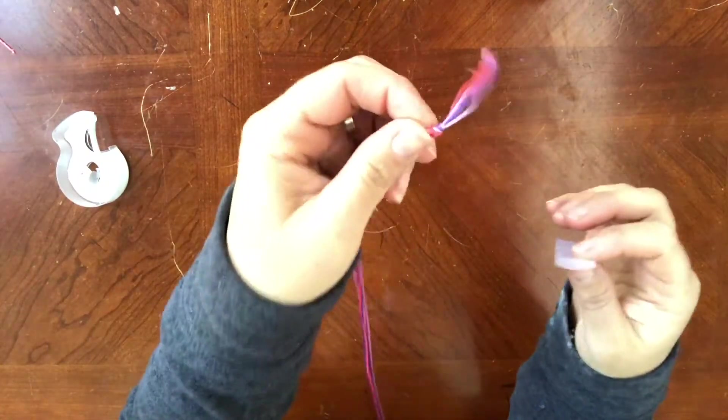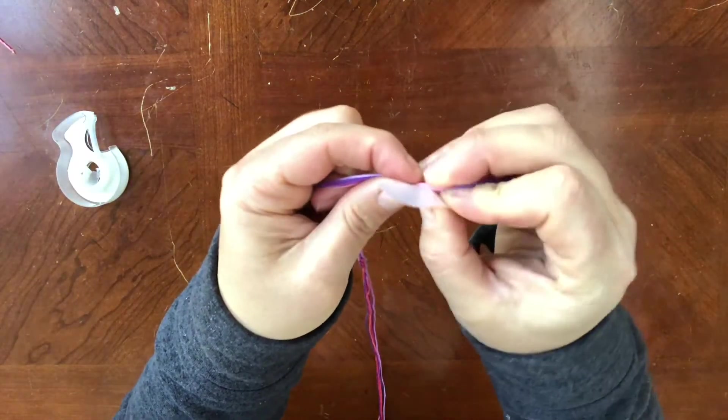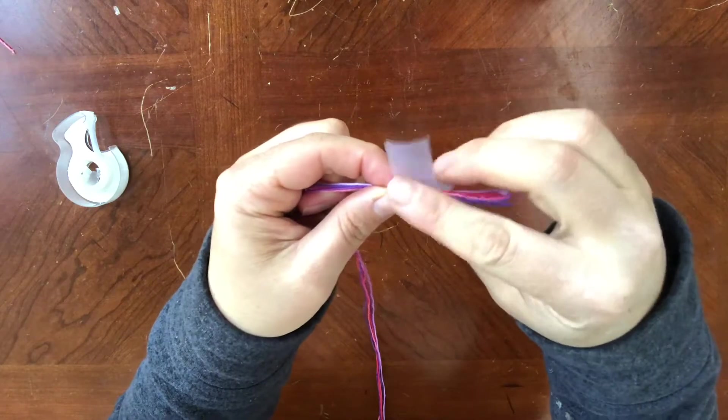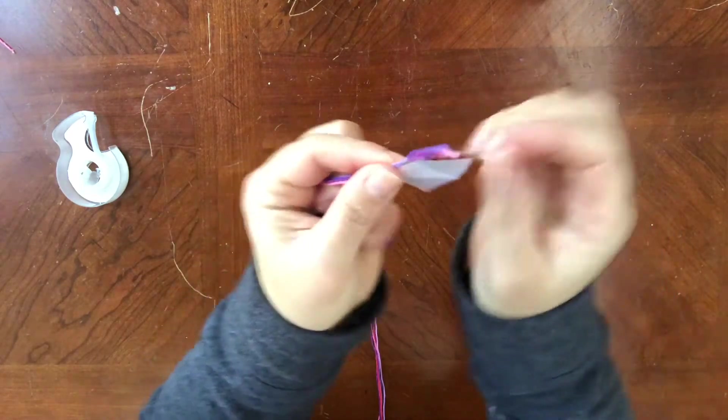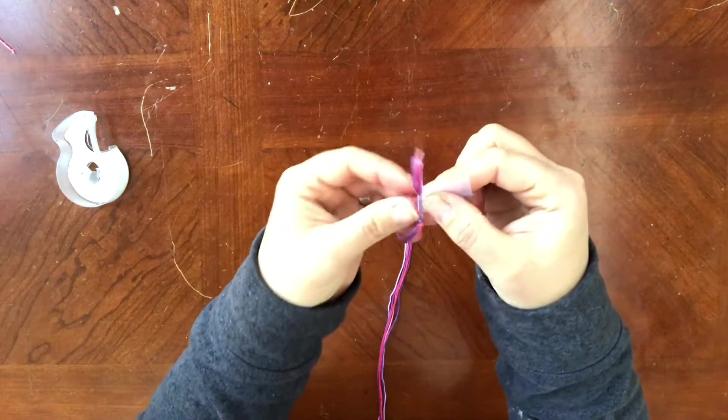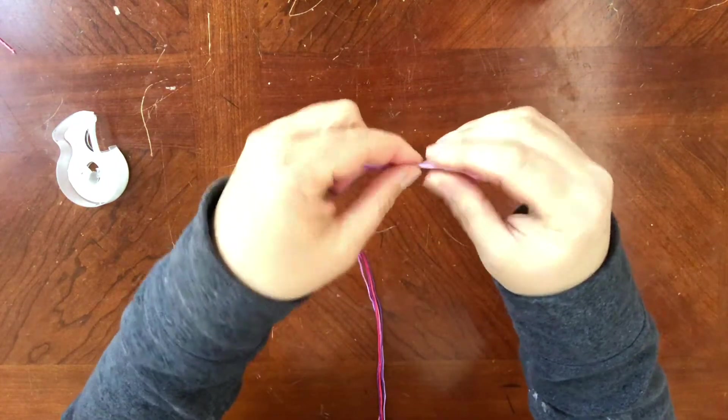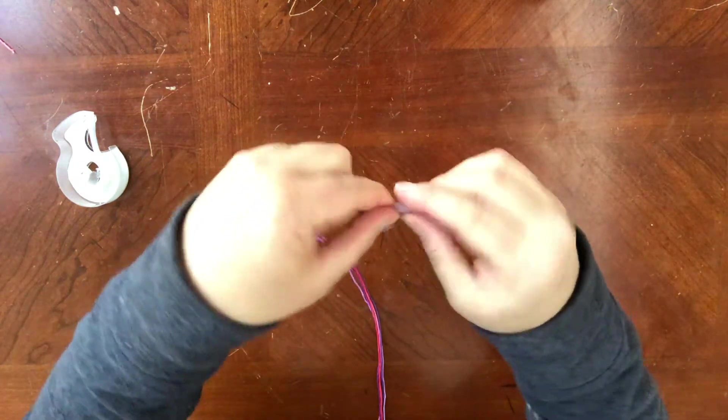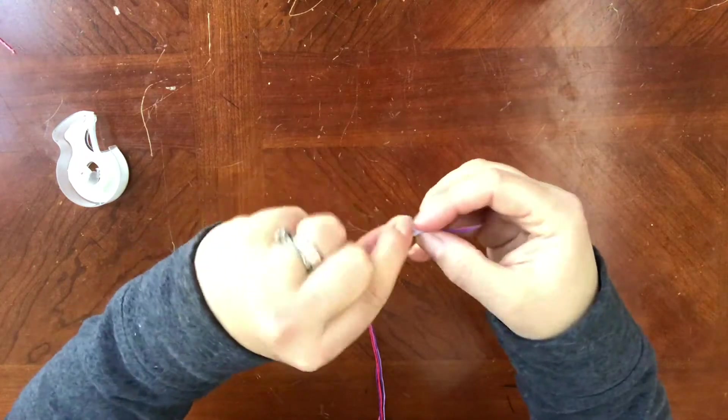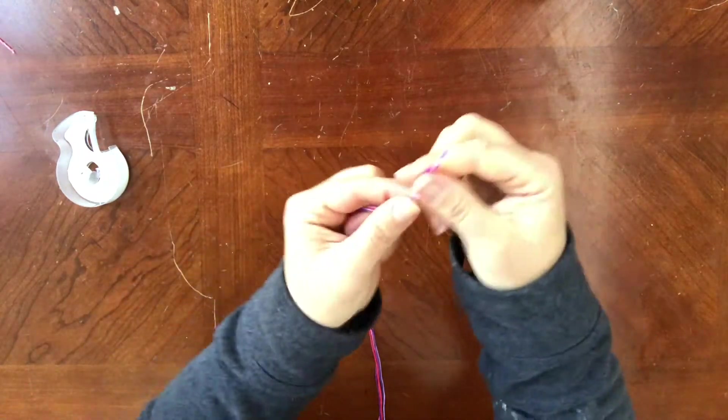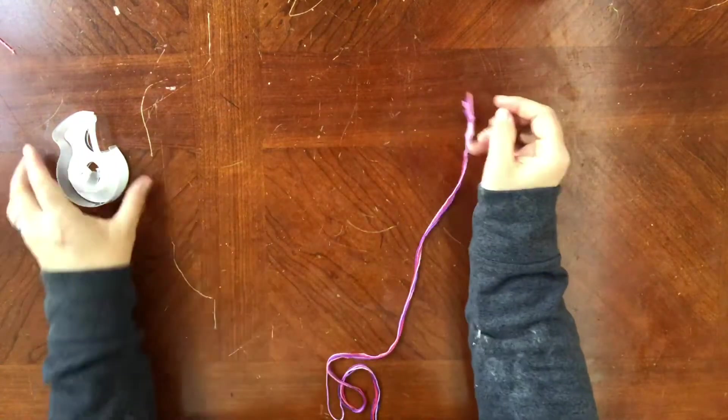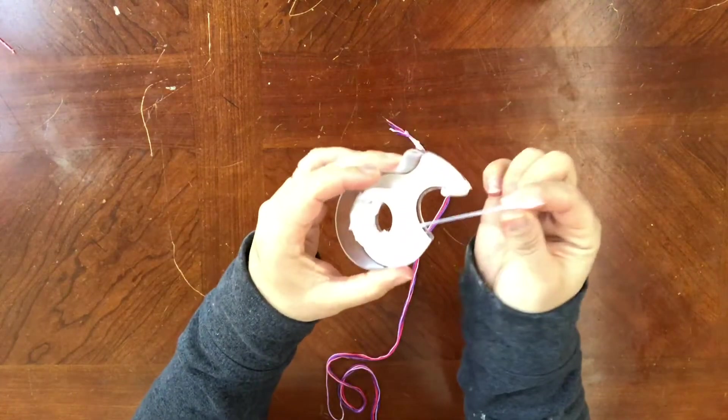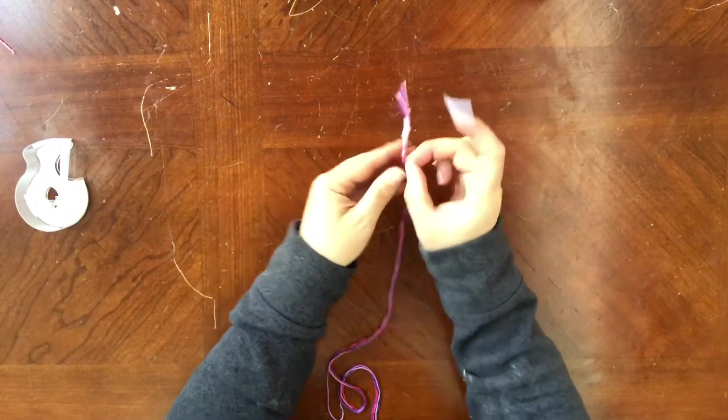Once you've tied your string together, then you want to tape it down. I find it a lot easier if you wrap the tape all the way around a few times so that it secures the top of the string in place, and then you can tape the entire thing to the table. Conversely, you can also use a safety pin to pin it to yourself or a pillow. I find it easier to work on a table, but it's up to everybody.